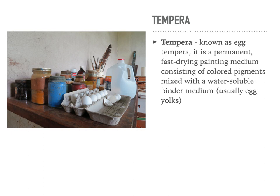Tempera. Egg tempera is a permanent, fast-drying painting medium consisting of colored pigments mixed with a water-soluble binder medium, usually egg yolks. So it would be just the yolk of the egg plus a little bit of water mixed up with the powdered pigment. This has to be mixed up before each painting session. Egg tempera cannot be bought in an art supply store — it has to be made and then used during that painting session. The layers that go on are semi-transparent and you build up layer after layer. You can get amazing effects of lighting and texture using tempera, but it dries very quickly when you put it down on the support, so you have to work very quickly and build it up in layers.